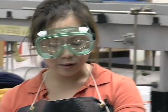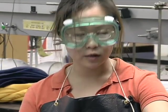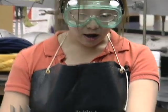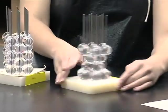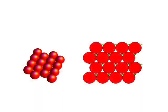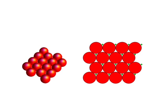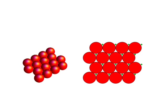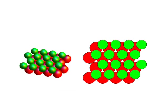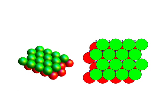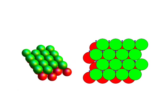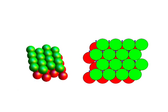Now we'll be looking at cubic close-packed structures. Seen here is a CCP, and its packing efficiency is about 74%. That's because its coordination number is 12, as seen from this molecule here in the center.